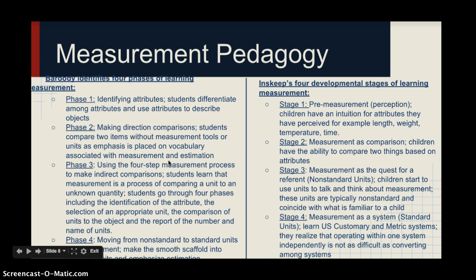Barutti's phases are very similar. Phase one involves identifying attributes, phase two is about comparison. Phase three involves a four-step measurement process for indirect comparisons: identification of the attribute, selection of an appropriate unit, comparison of units to the object, and report of a number. Phase four involves moving from non-standard to standard units — similar to Inskeep's model.